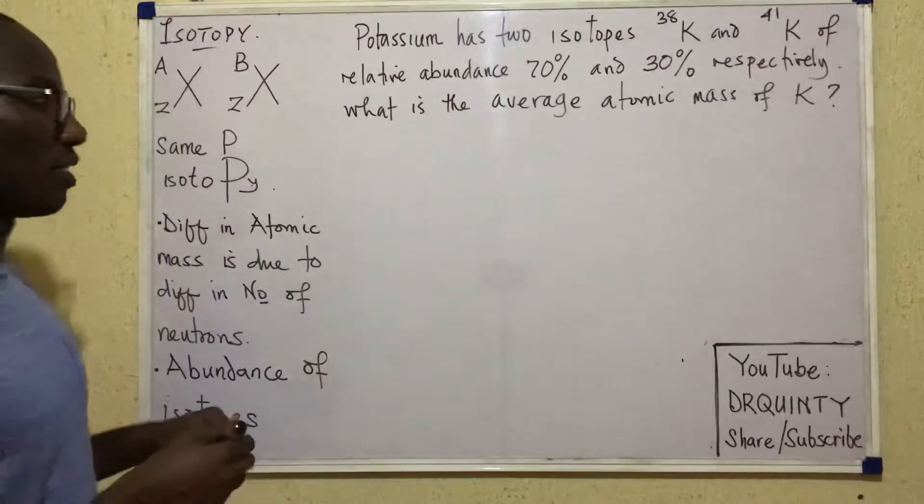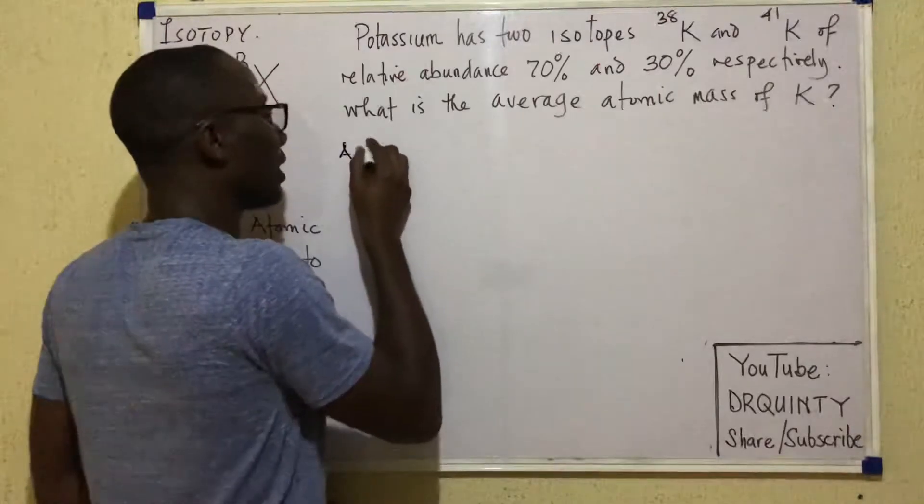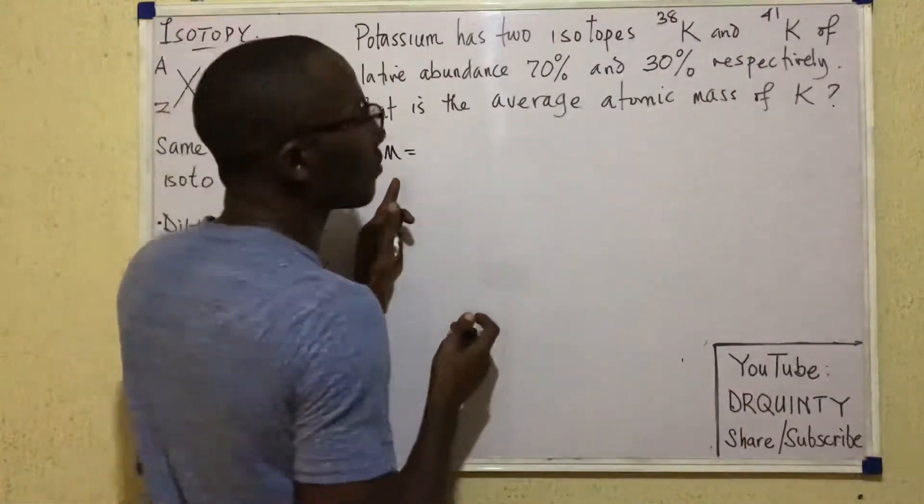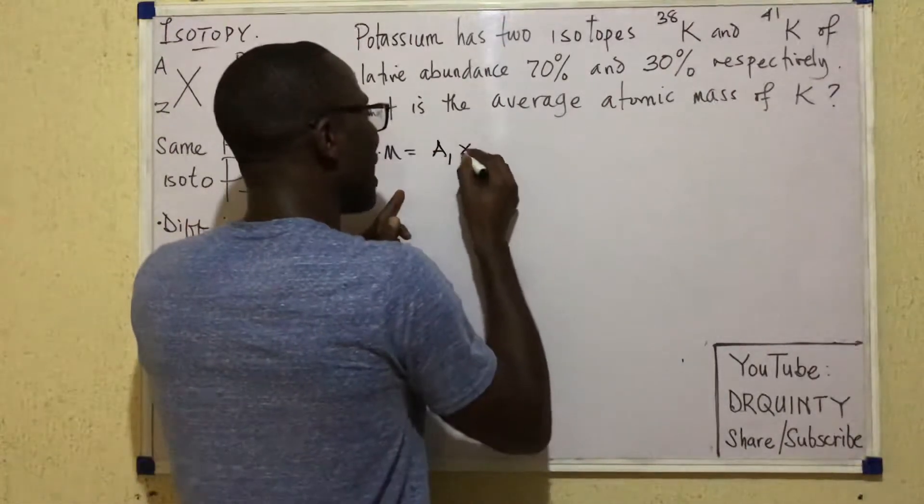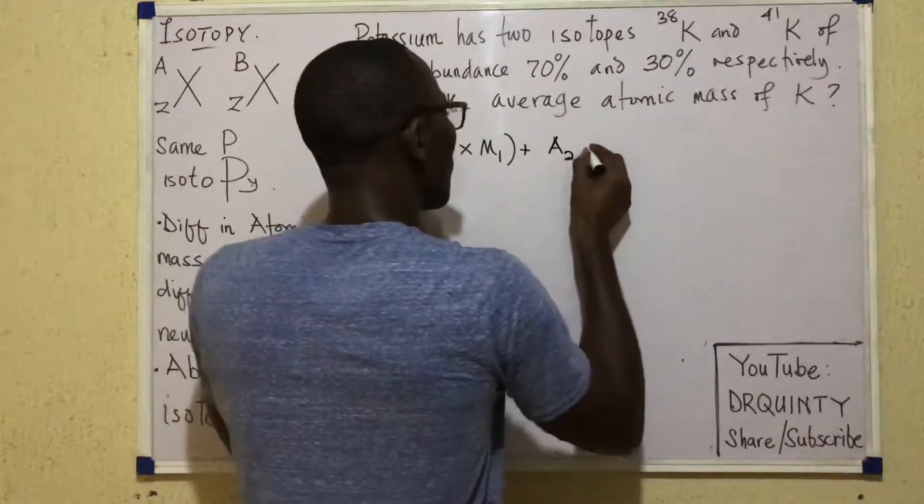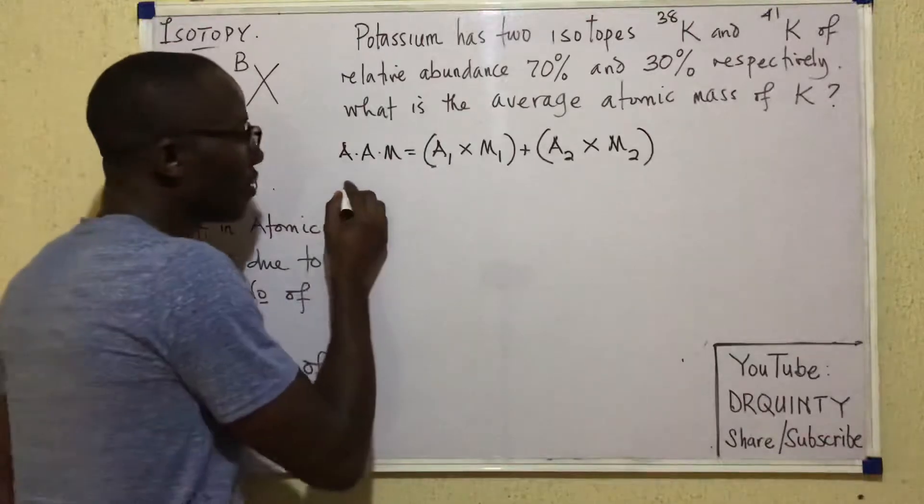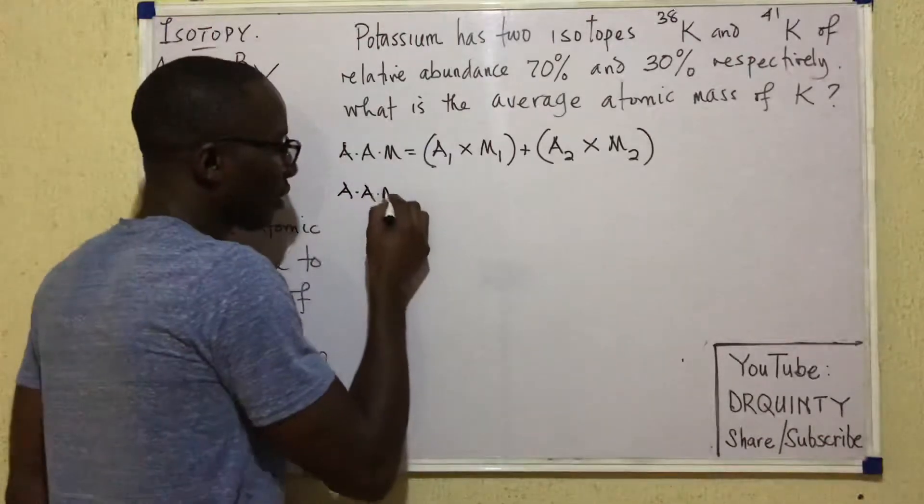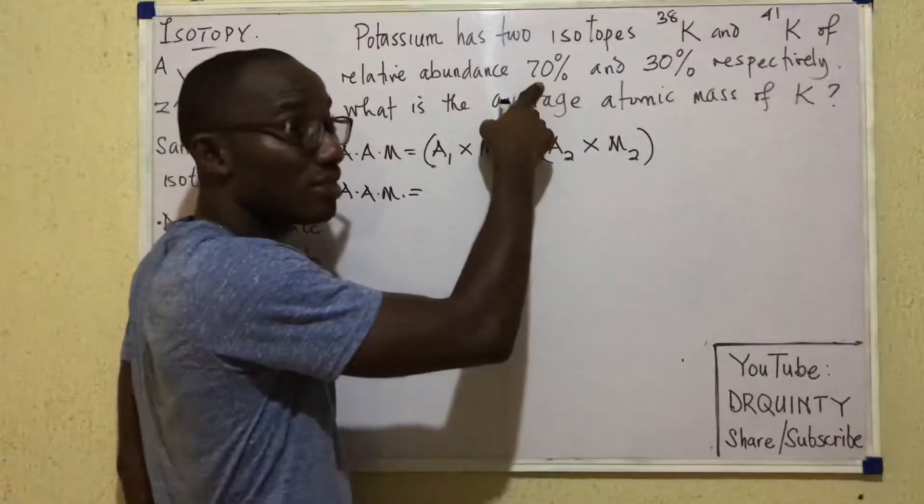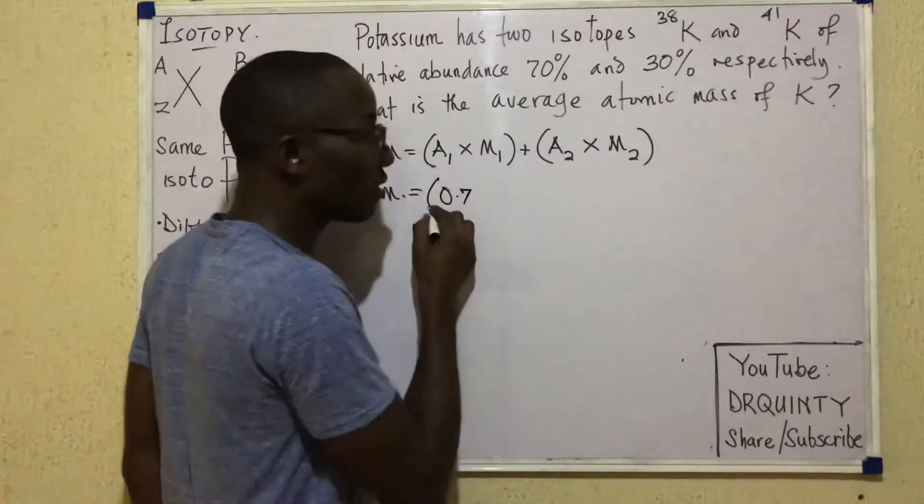If we were to solve a question like this, there's a very simple formula we use. That formula says average atomic mass, which is otherwise called mean atomic mass, is equal to the abundance of the first isotope times the mass of that isotope plus the abundance of the second isotope times the mass of that second isotope.